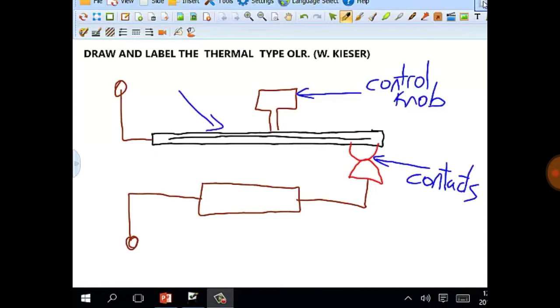The bimetal strip, which is the part that heats up. And then we've got the heating elements where the current runs through and provides heat to the biometal strip.